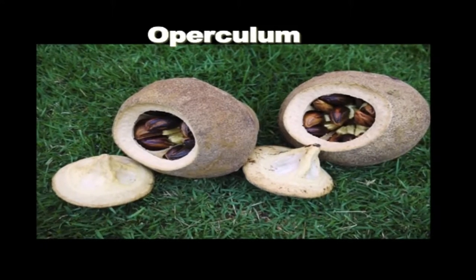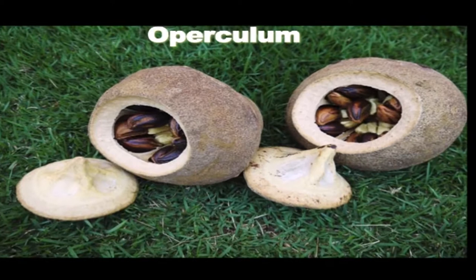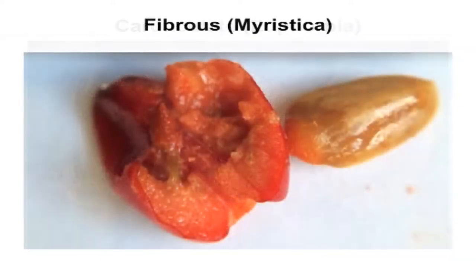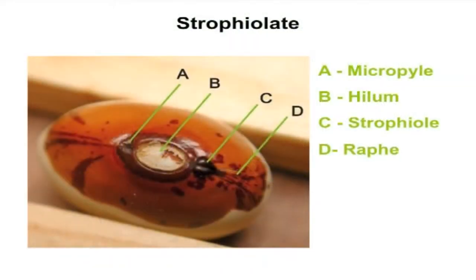Operculum is known as the seed lid. It refers to a dehiscent cap on the seed or fruit that opens during germination. Cornuculate is a seed with excrescent outgrowth from integuments near the hilum, as in the case of Euphorbia. Fibrous are those seeds which have a stringy or cord-like seed coat — for example, Myristica. Funicular are those seeds which have a persistent elongate funiculus attached to the seed coat, as in the case of Magnolia. Strophiolate is a condition of those seeds with an elongate aril or strophiole in the hilar region.